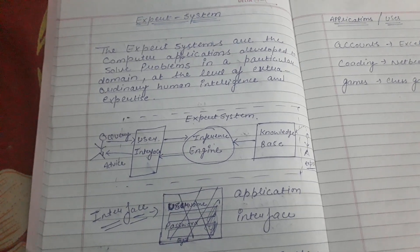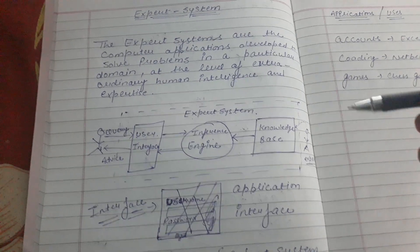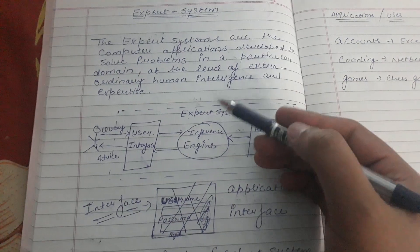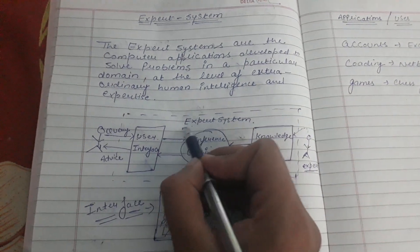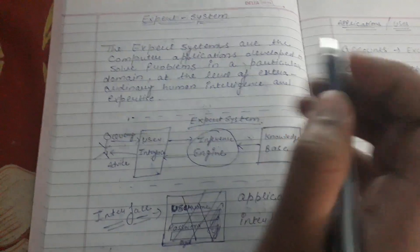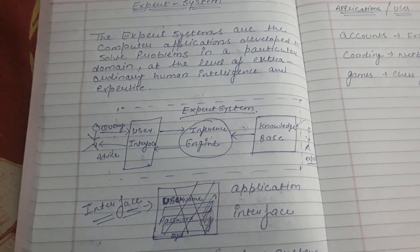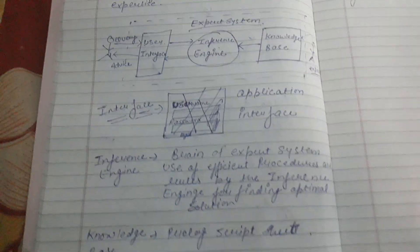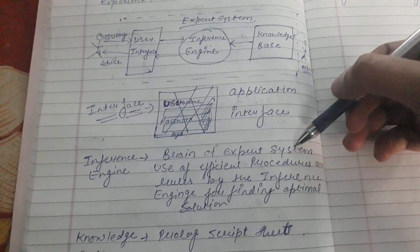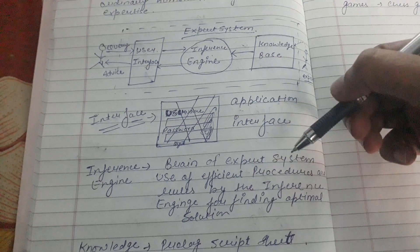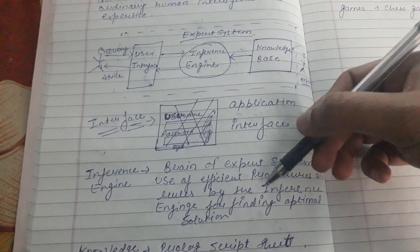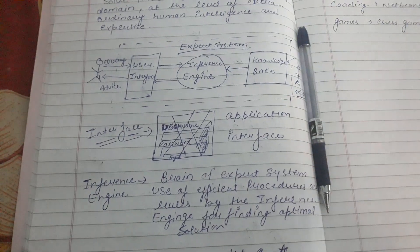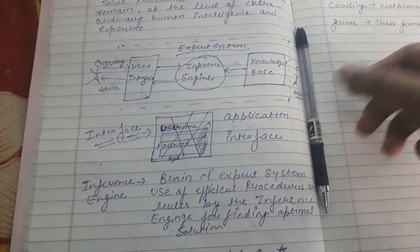These symptoms go to the inference engine. The inference engine is basically the brain of the expert system. It follows some rules. The brain of the expert system uses an efficient processor and rules by the inference engine for finding the optimal solution.